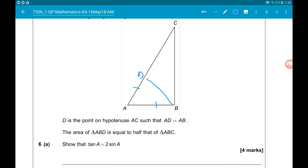So we're told the area of triangle ABD is half the area of triangle ABC. We want to show that tan A is equal to 2 sin A.